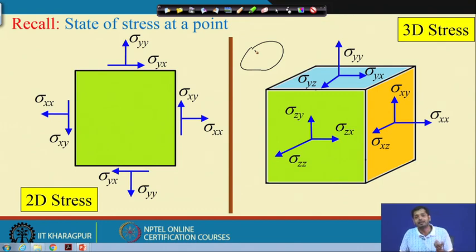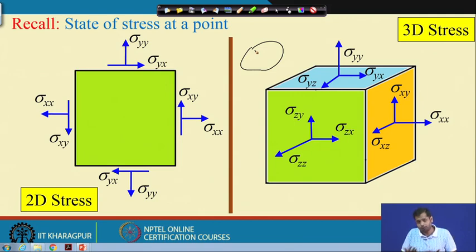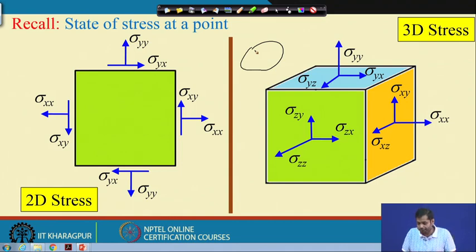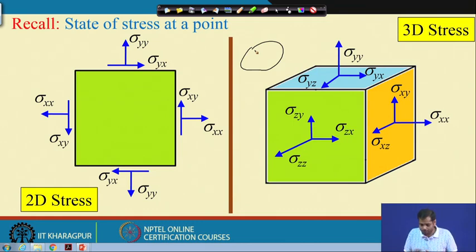In three-dimensional space, we have 9 components of stress, of which 6 are independent — 3 normal stresses and 3 independent shear stresses. For a linear isotropic material in 3D space, we have 6 independent stress components.